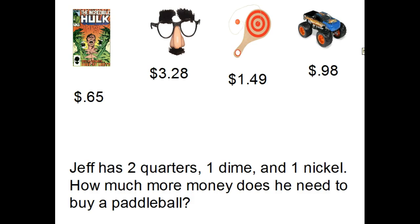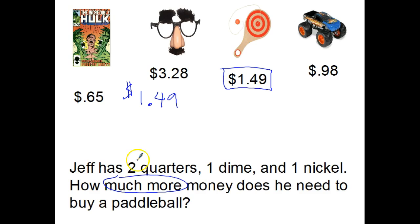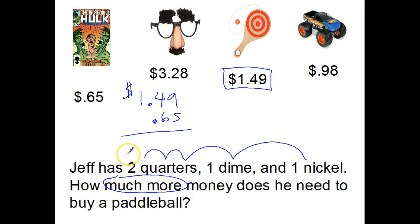Jeff has two quarters, one dime, and one nickel. How much more money does he need to buy a paddle ball? I see 'much more,' so I know there's a subtraction somewhere. The paddle ball costs more than what he has, so the paddle ball goes on top at $1.49. Two quarters is $0.50, add a dime — $0.60, add a nickel — $0.65. So he's got $0.65. We need to figure out how much more money he needs, so we subtract: $9 minus $5 is $4, $4 minus $6 can't do — let's borrow. Line up the decimal point, and we end up with $0.84.